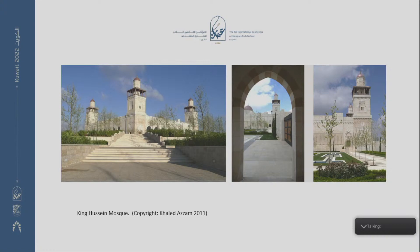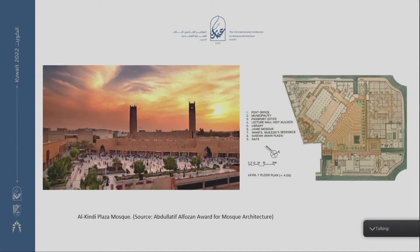The next example is the Kendi Plaza in Riyadh, also one of the famous examples. This example shows how the mosque is connected to the urban fabric. The mosque is designed in a Najdi style, so the landscaping reflects that. There are not many trees, mostly paving. But at the same time, this space provides a socializing space for the people coming to the site.